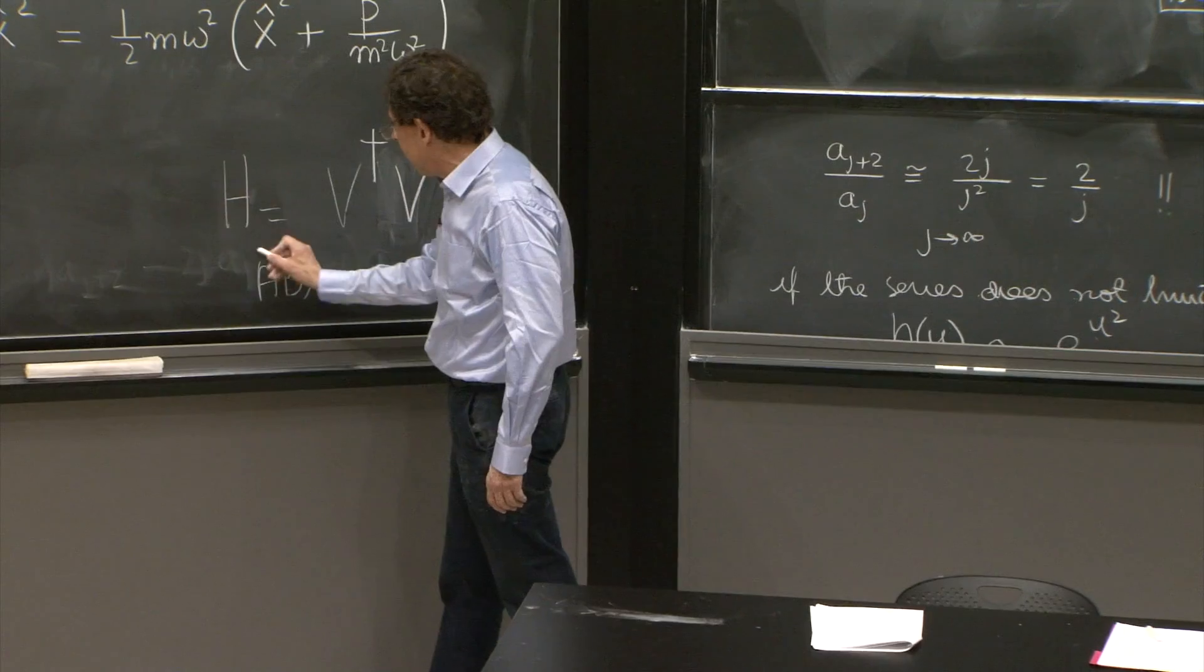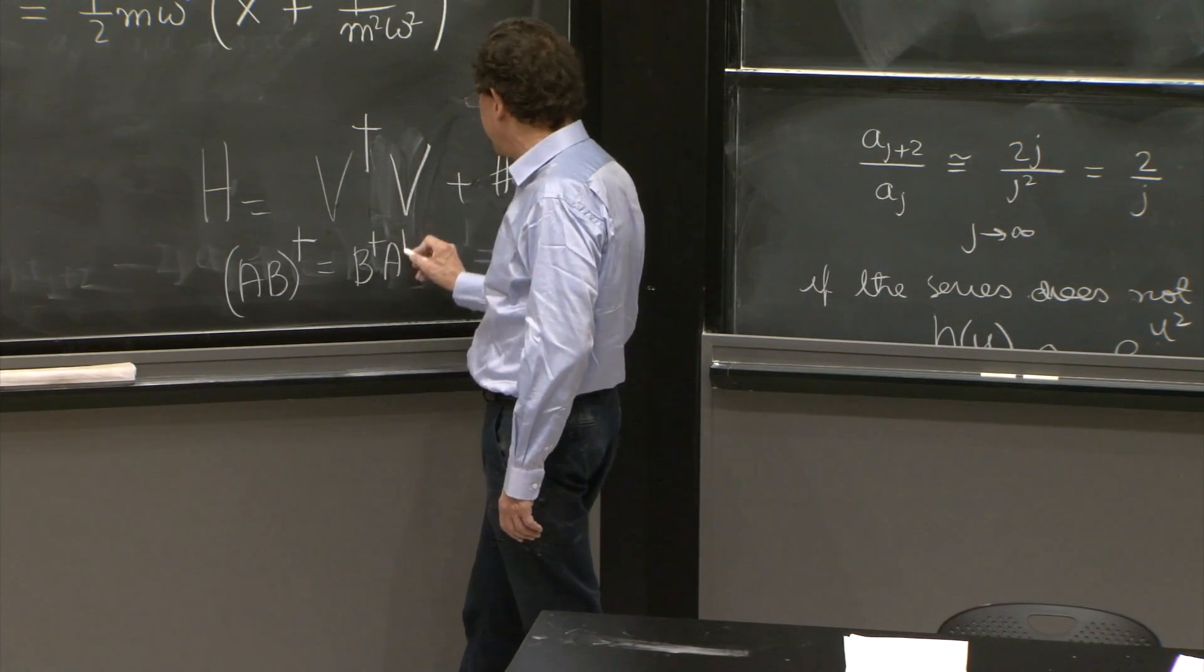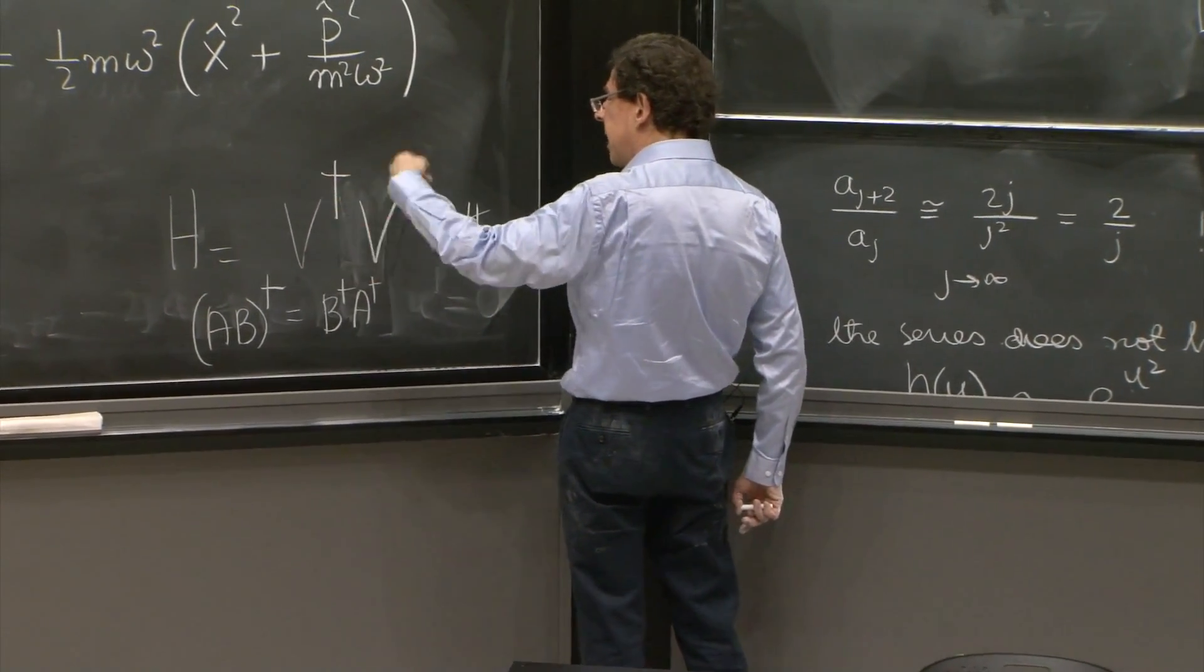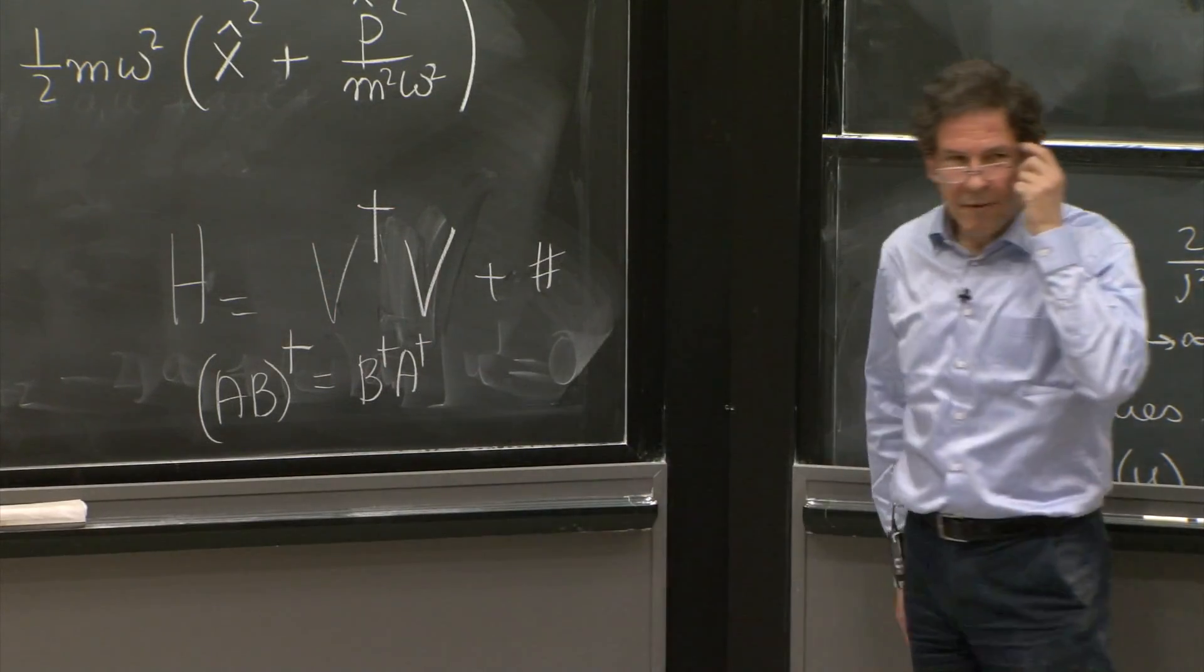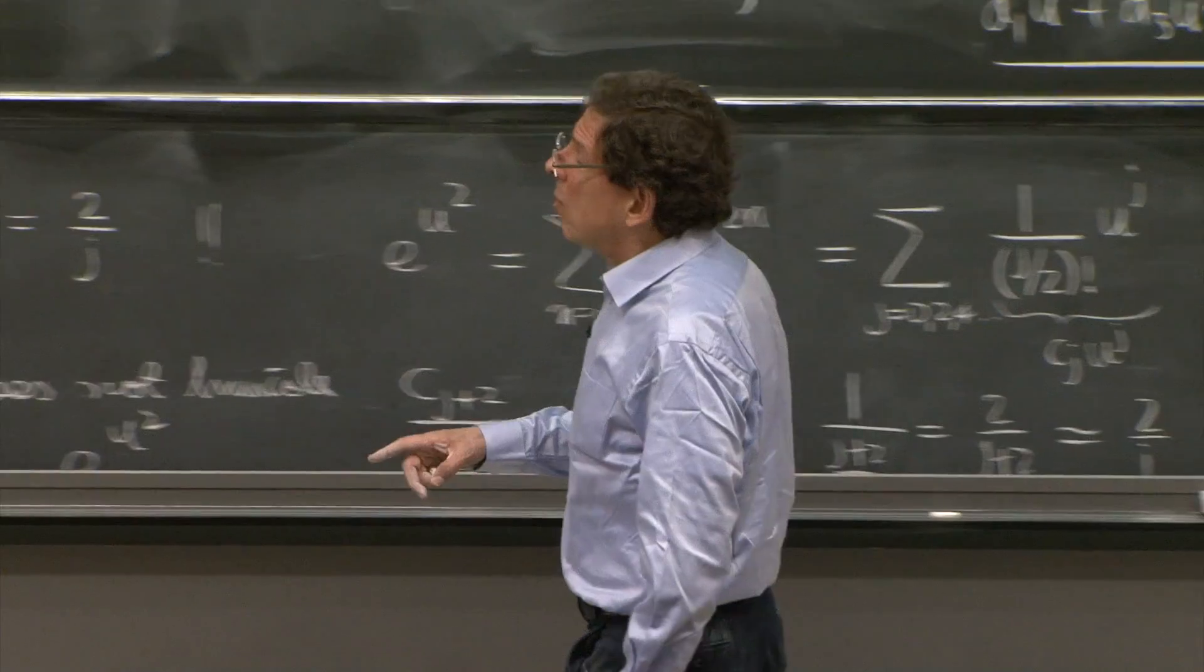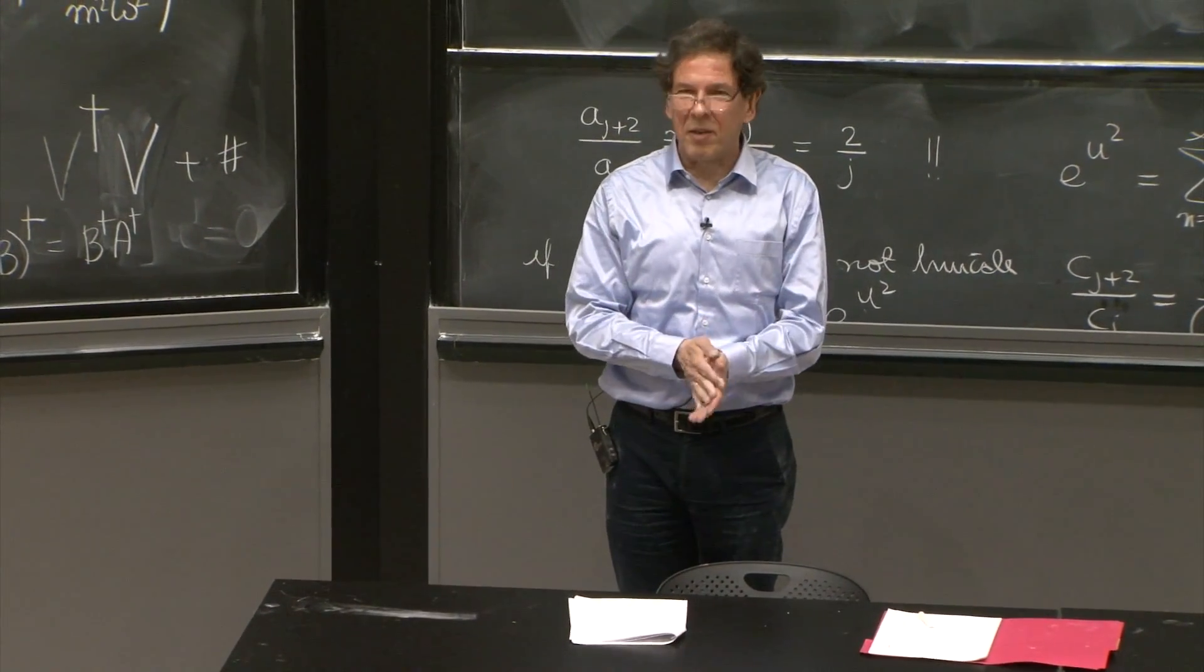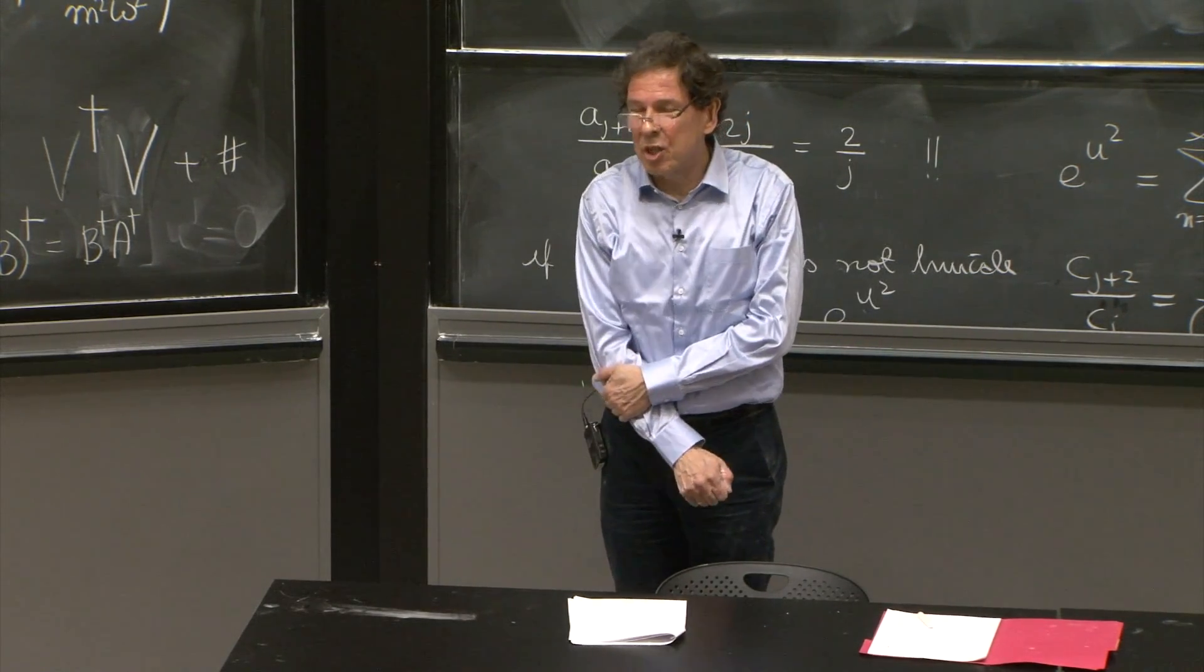You may recall that ab dagger, the Hermitian conjugate of ab dagger, is v dagger a dagger. So the Hermitian conjugate of this product is v dagger times the dagger of v dagger. Dagger of a dagger is the same operator. When you dagger it twice, you get the same. So this is Hermitian. v dagger times v is a Hermitian operator. And that's a very good thing. And there will be great simplifications if you ever succeed in writing a Hamiltonian this way. You've gone 90% of the way to solving the whole problem. It has become infinitely easier, as you will see in a second, if you could just write this factorization.